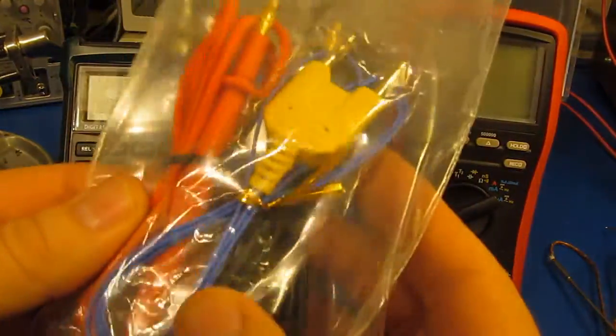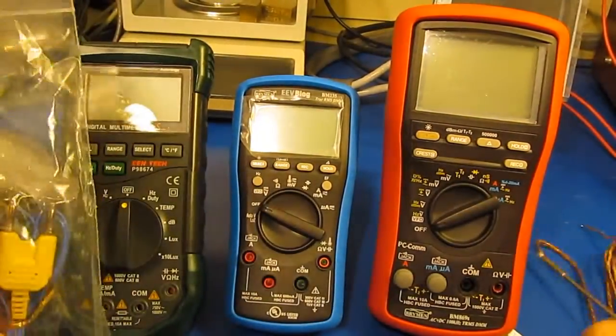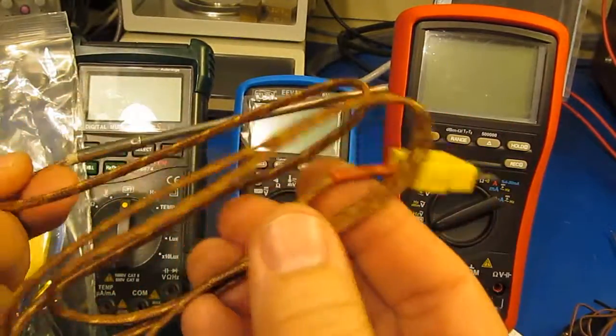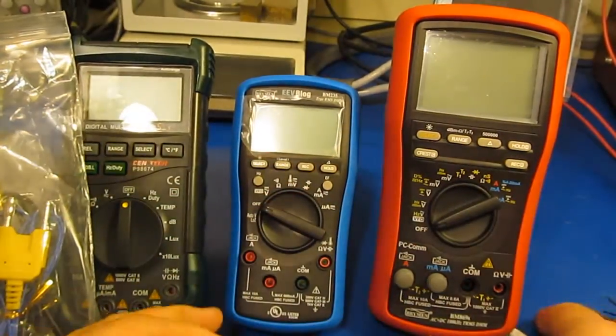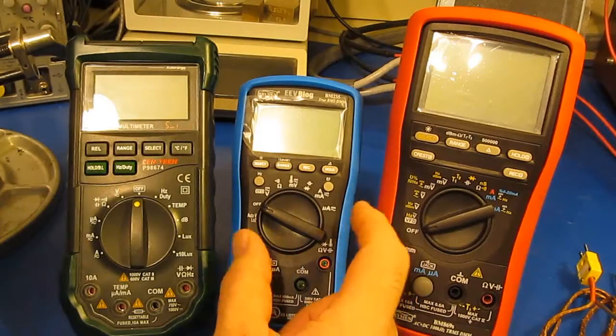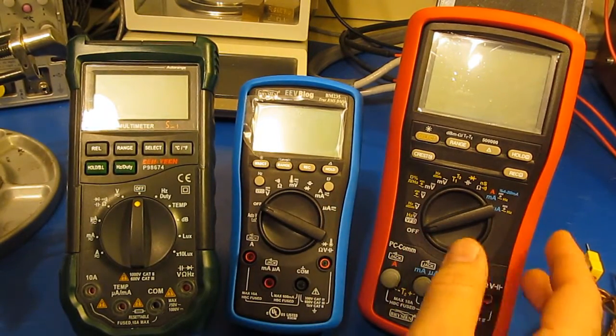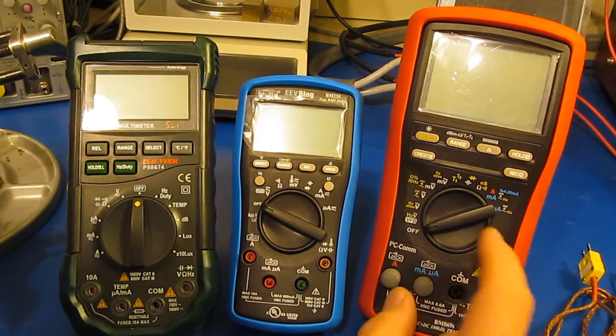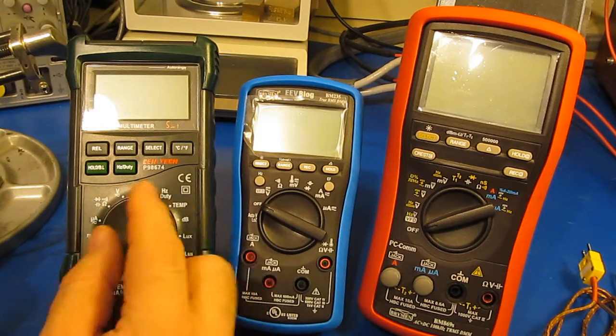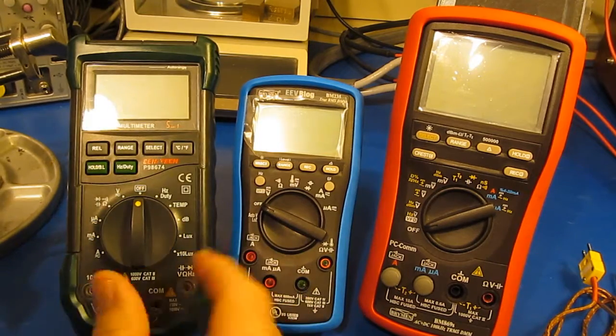So this is the original probe. I have never used this one. This came with the BM 235. And here we have a probe more like what I would typically be using, and here we have a probe that was included with one of the Fluke meters. So in the center we have the EEV blog rebranded BM 235, to the right of that the Brymen BM 869S, and then to the left this is a Mastech meter, it's rebranded under Cen-Tech as a part number P98674. This is definitely the cheapest of the three meters.